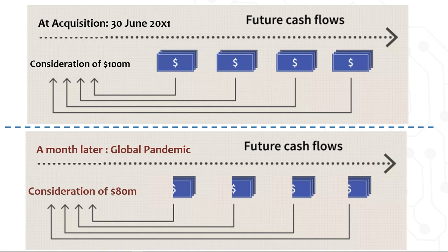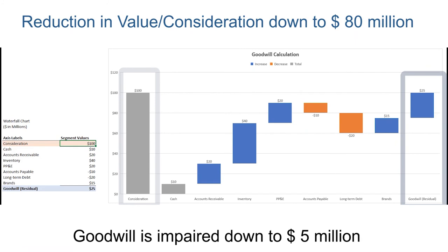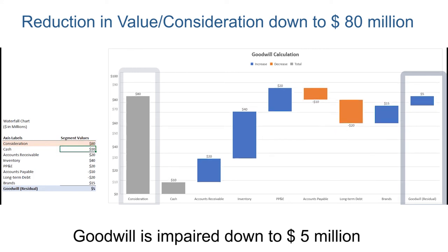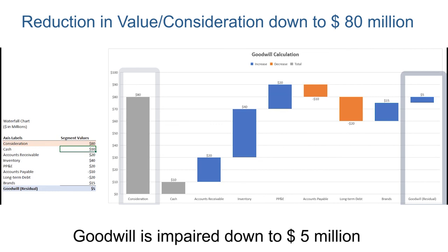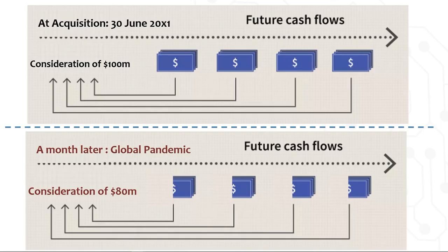What will then be the Goodwill? So instead of $100 million, Heinz values Kraft at $80 million and therefore would only pay $80 million. Goodwill has decreased from $25 million to $5 million. Put simply, because of changes in expectations of Kraft's business and changes in Kraft's business value, Goodwill has been impaired down from $25 million to $5 million.